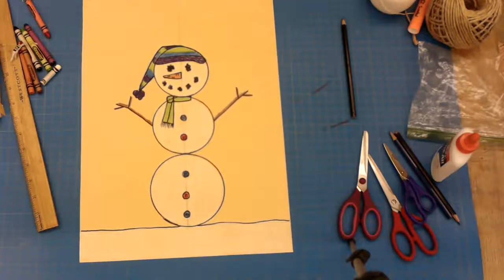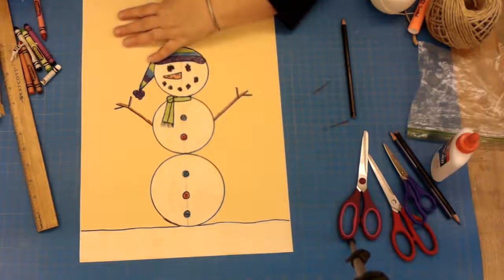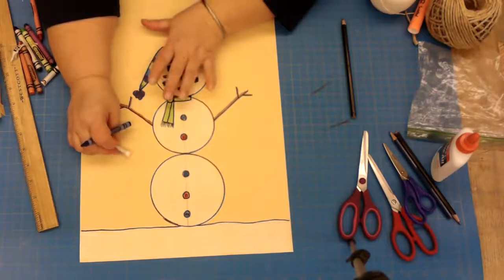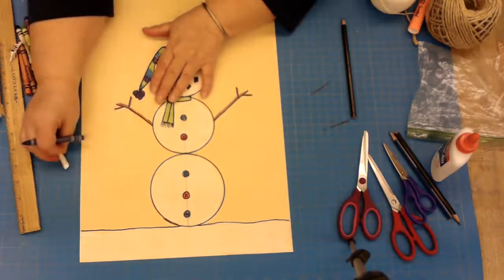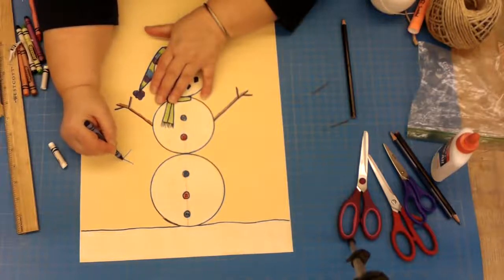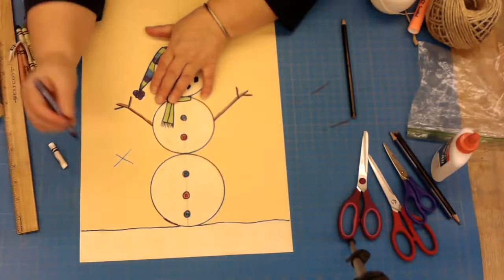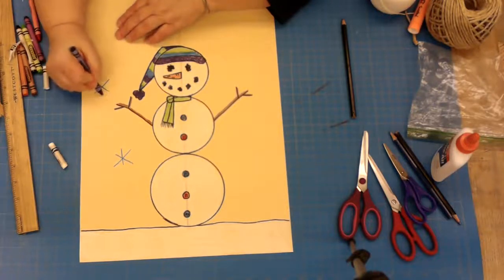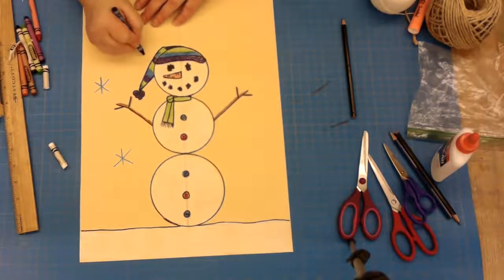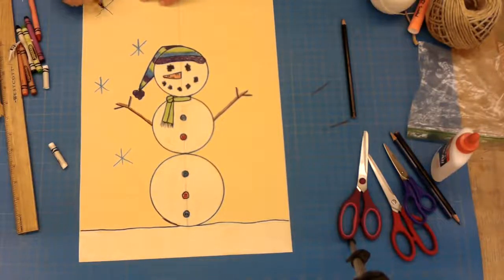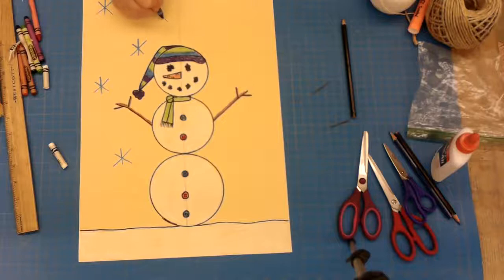So that's it. If I want to, I can add some snowflakes. Usually I would do these in white, but I want to make sure that they show up on the camera nicely for you. To do a snowflake, I simply make an X and put a line through it. An X with a line through it, that's because snowflakes are divided into six sections.